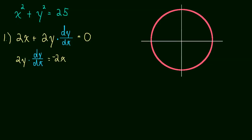Divide by the 2y, and we get the derivative. That's what we're after, after all, dy dx, that's what we want. The derivative, dy dx, is equal to negative x over y.